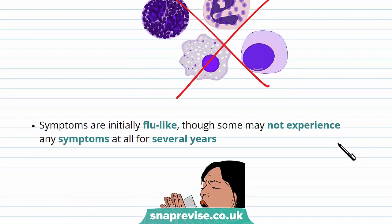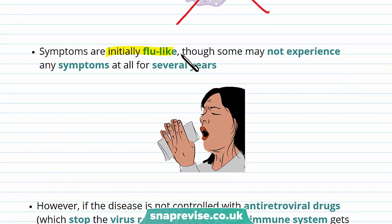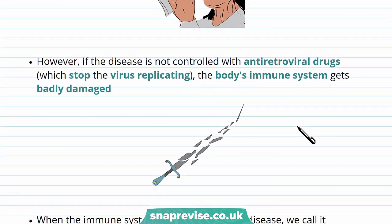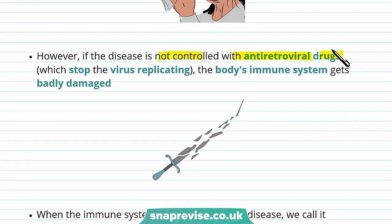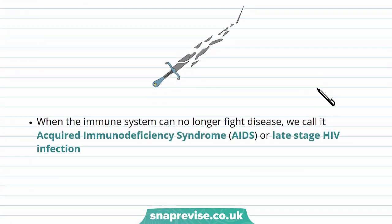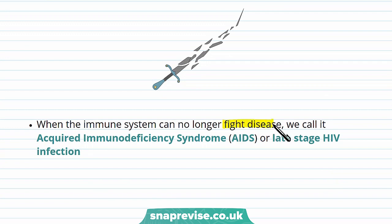The symptoms of HIV are initially flu-like, though some people may not experience any symptoms for several years. If the disease isn't controlled with antiretroviral drugs — which stop the virus replicating — the body's immune system gets badly damaged. This is why it's really important to treat people with HIV with antiretroviral drugs, otherwise they could become very ill. When the immune system can no longer fight the disease, we call it Acquired Immunodeficiency Syndrome, or AIDS.